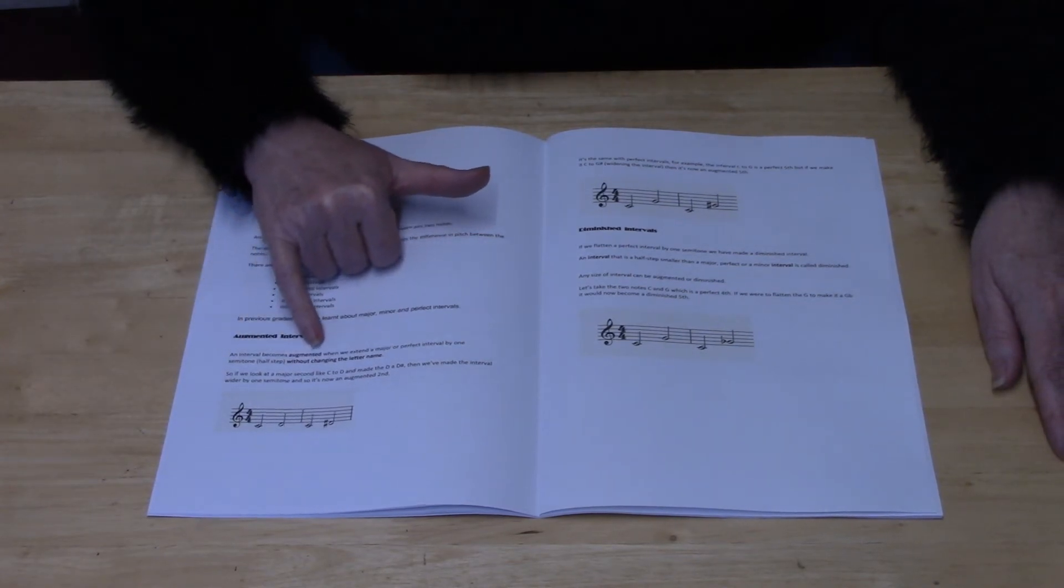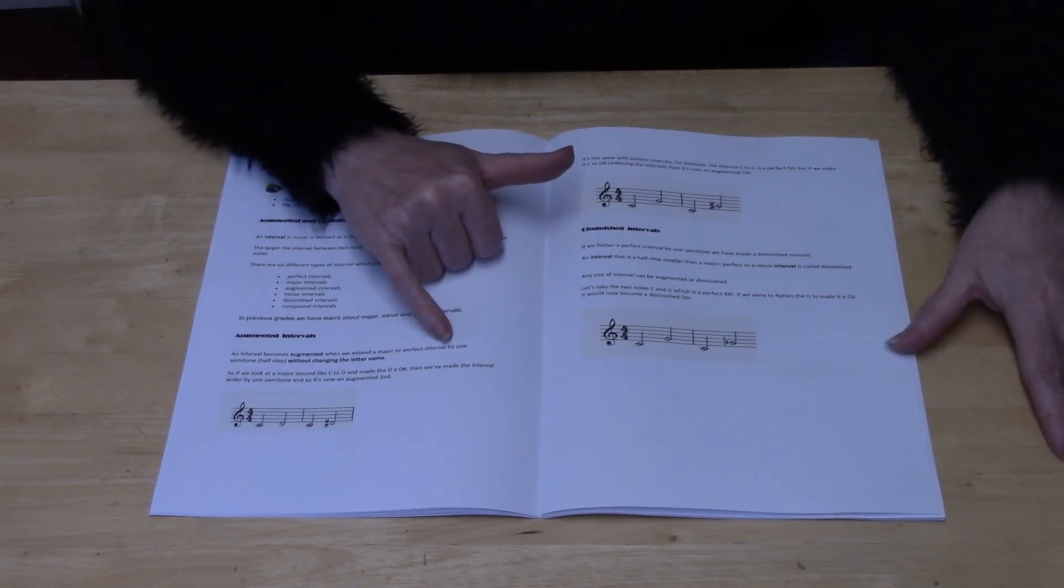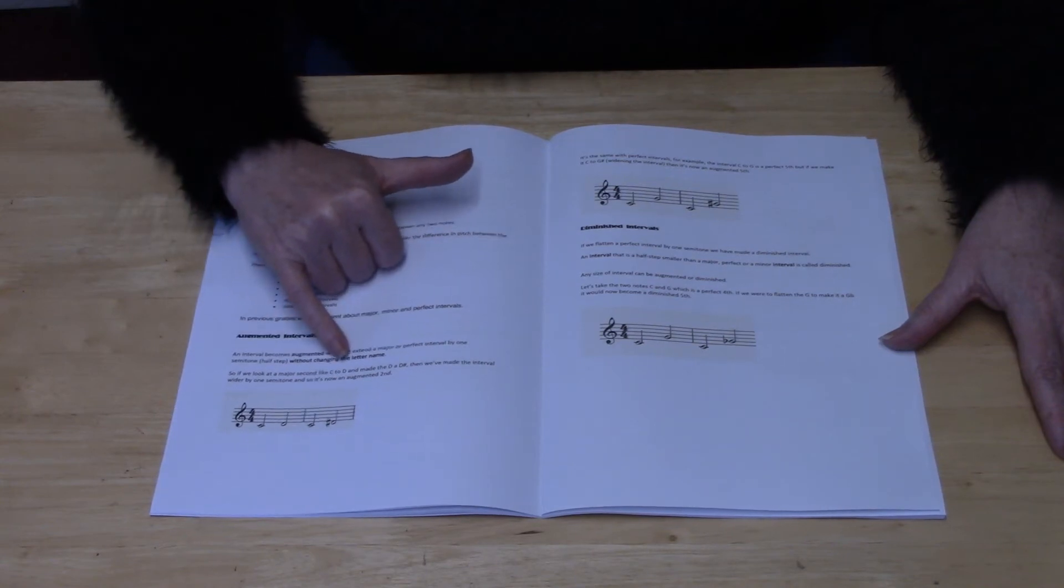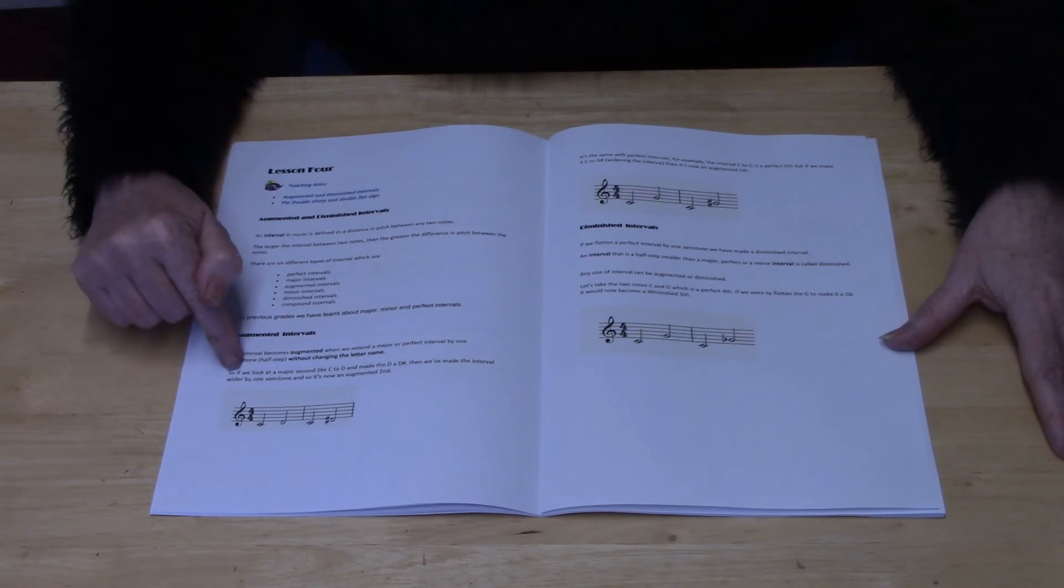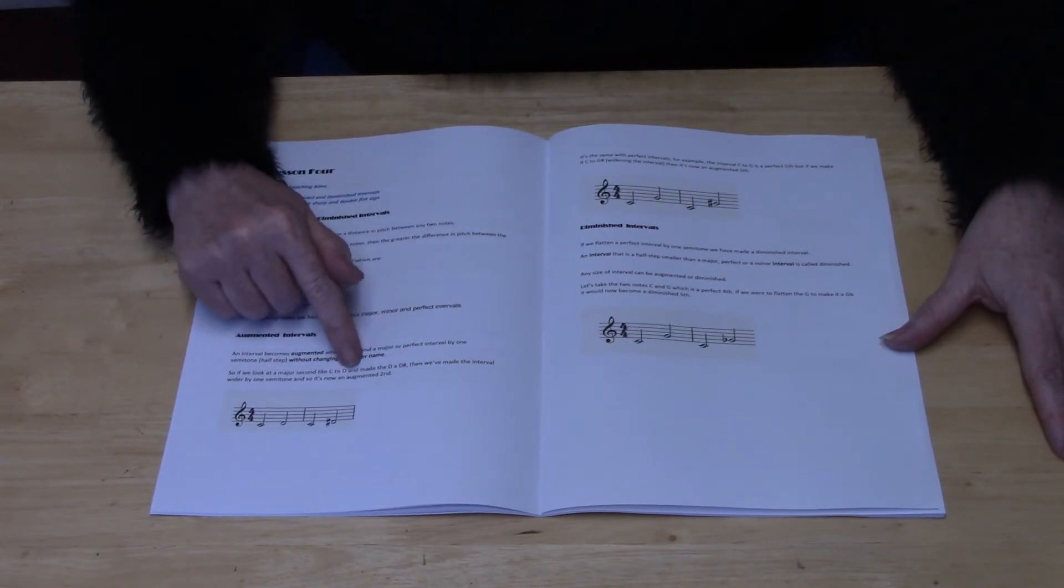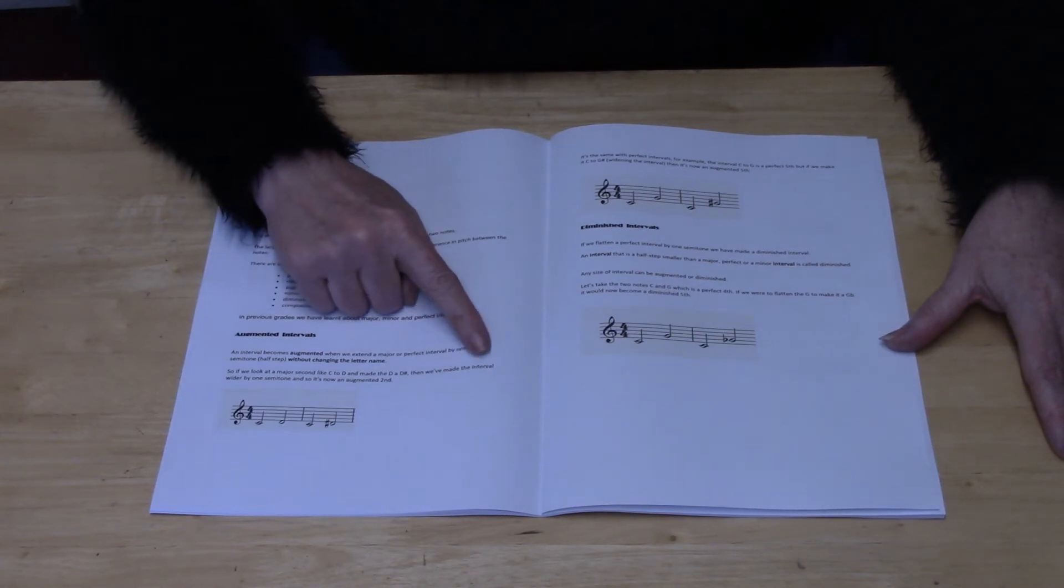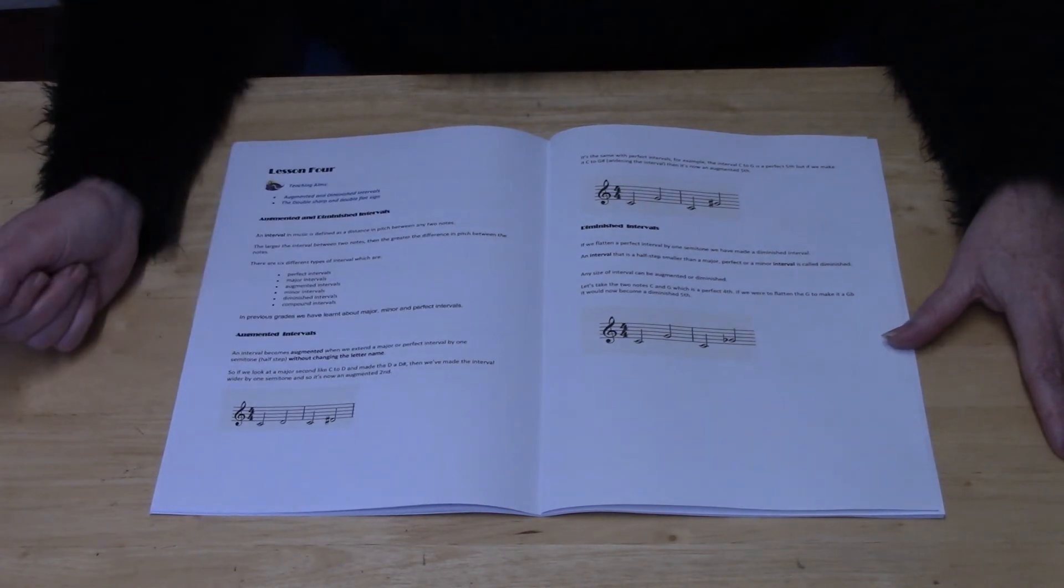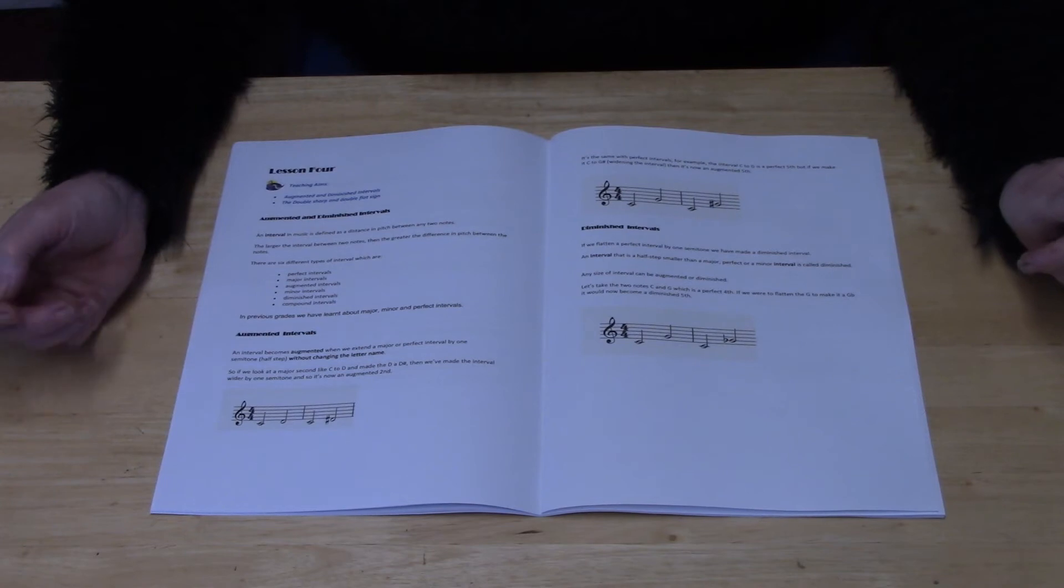An interval becomes augmented when we extend the major or perfect interval by one semitone without changing the letter name. For example, if we look at a major second like C to D and make the second note a D sharp, then we've made the interval wider by one semitone. So it's now an augmented interval. C to D sharp is called an augmented second.